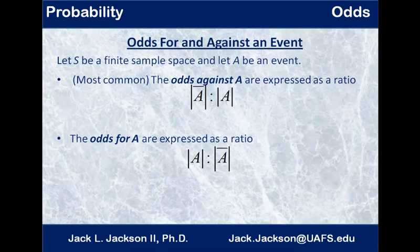Odds for and against an event are a little bit different way of representing the same idea. So the odds against A are expressed as a ratio of the size of the complement of A to the size of A.